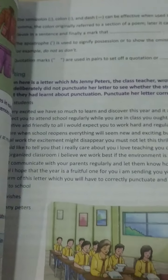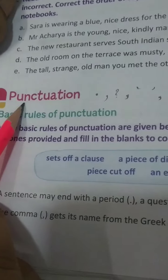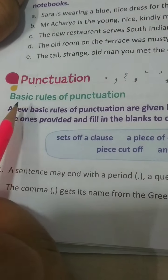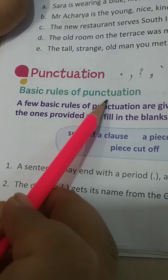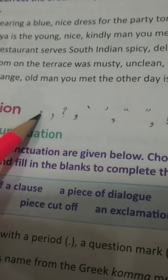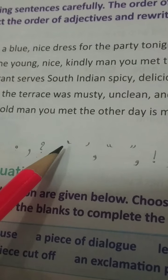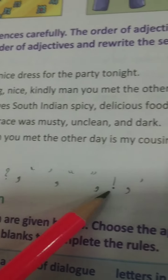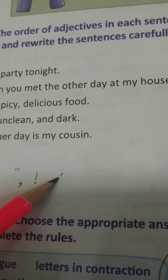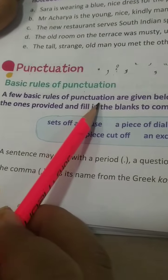Now the last thing — turn the page, it's very important. Page number 20, punctuation. There are some basic rules of punctuation and I think you all know about the punctuation marks. This is full stop — you all know when to use a full stop: at the end of every sentence. Question mark — when we ask something. Single inverted, double inverted, exclamation, and apostrophe. These are the basic punctuation marks. A few basic rules of punctuation are given below.